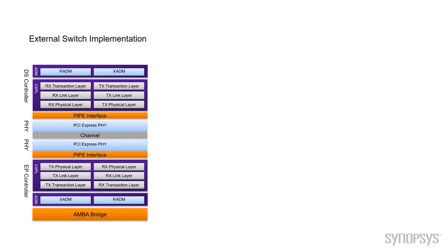The first reference point is the standard external switch implementation. At the top of this block diagram on the left is the downstream switch port controller, showing the different layers: the transaction layer, link layer, physical layer, and the application-dependent modules. That communicates to a PHY through a pipe interface. The PCI Express PHY then talks across a channel — which could be a card, a backplane, or a cabling solution — for serial communication from one PHY to another. On the other side of that channel is another PHY connected through a pipe interface to an endpoint controller, going through the physical layer, link layer, transaction layer, and into the application, with an optional AMBA bridge shown.